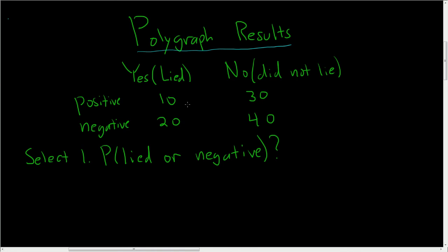Well, if you look at the column here, it says lied. To figure out how many liars you have, you just add the 10 and the 20. So you do 10 plus 20. So you have 30 liars, 30 people lied.